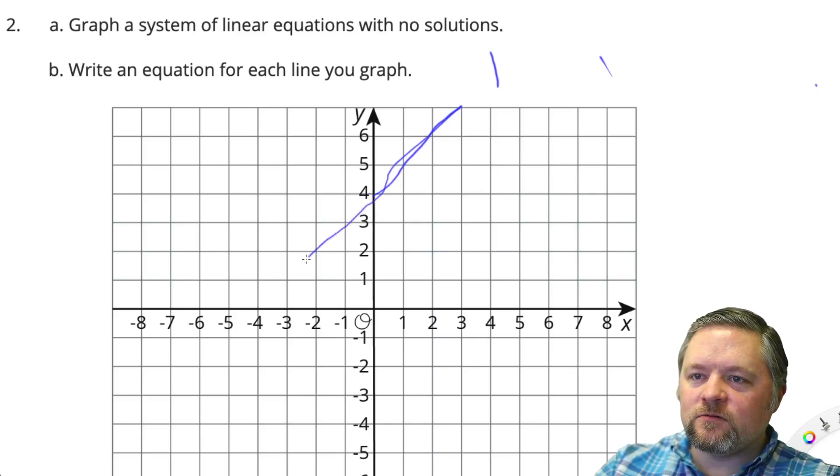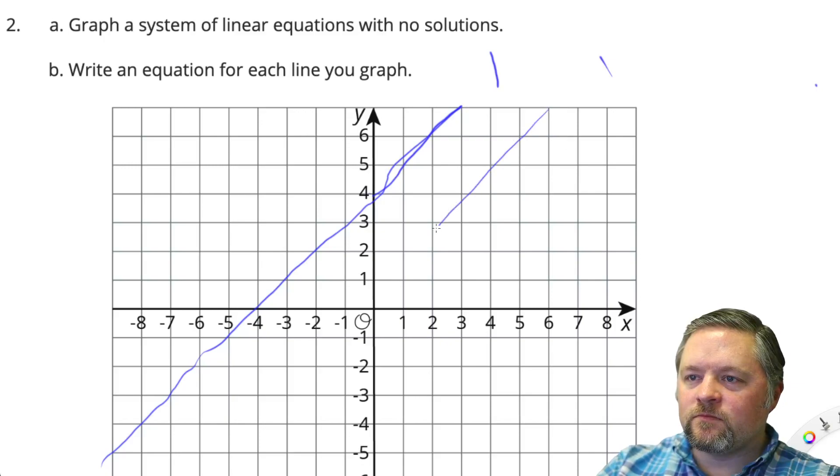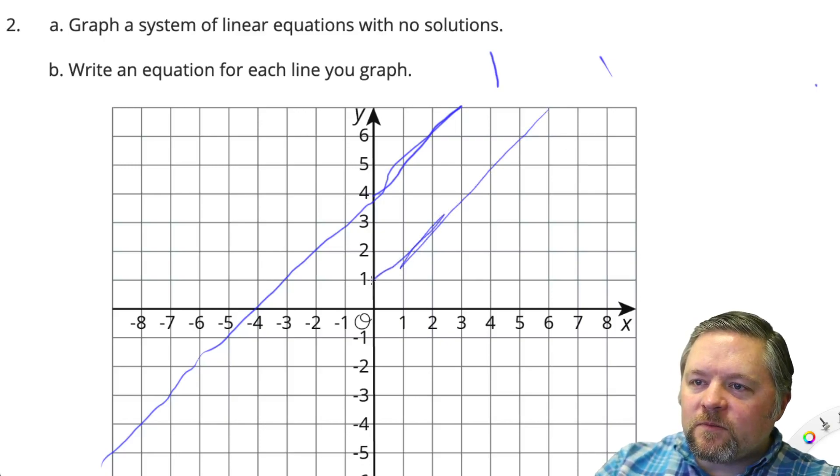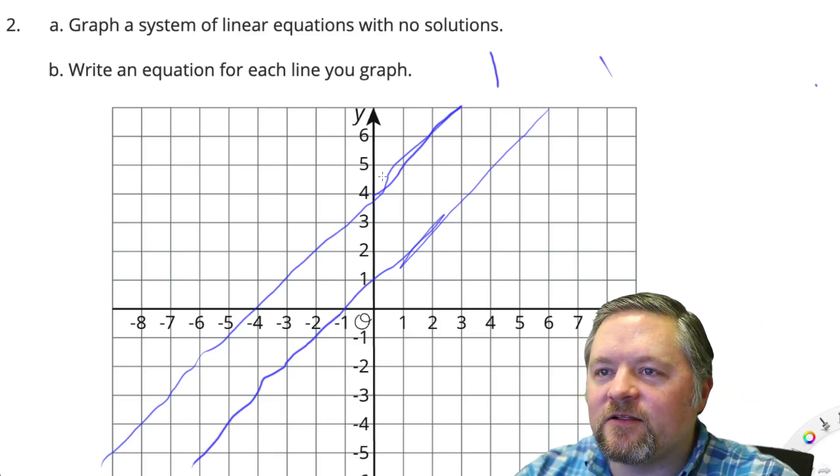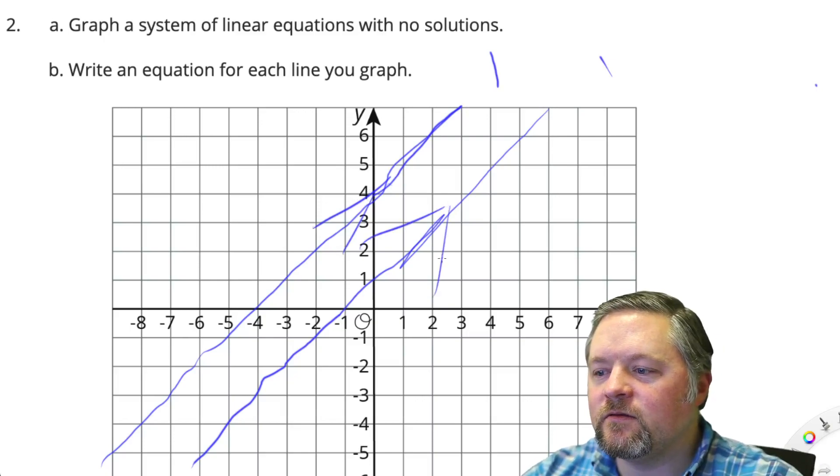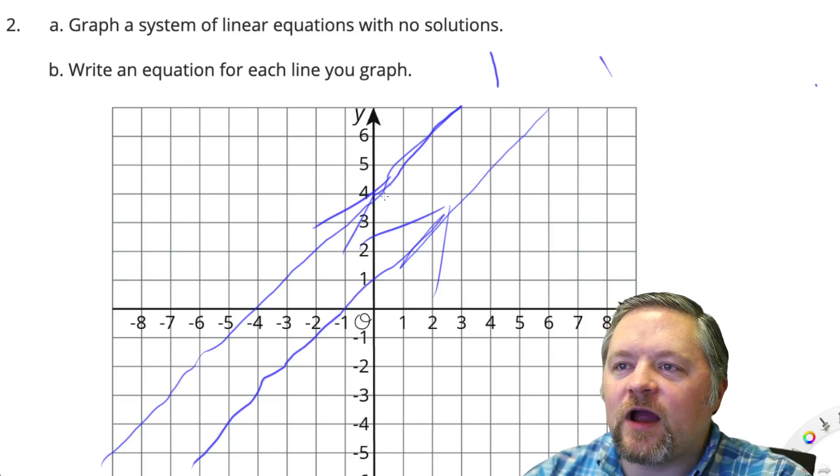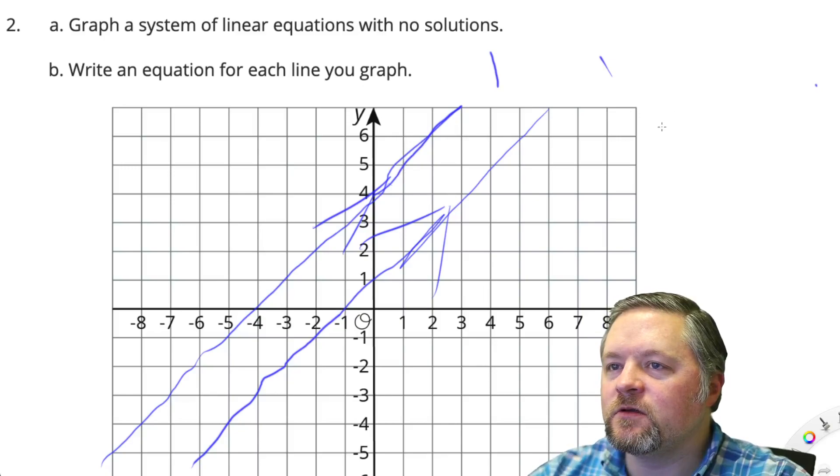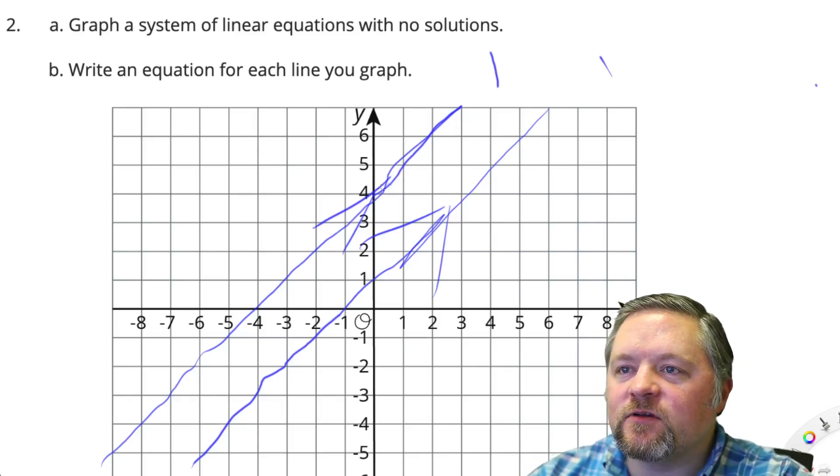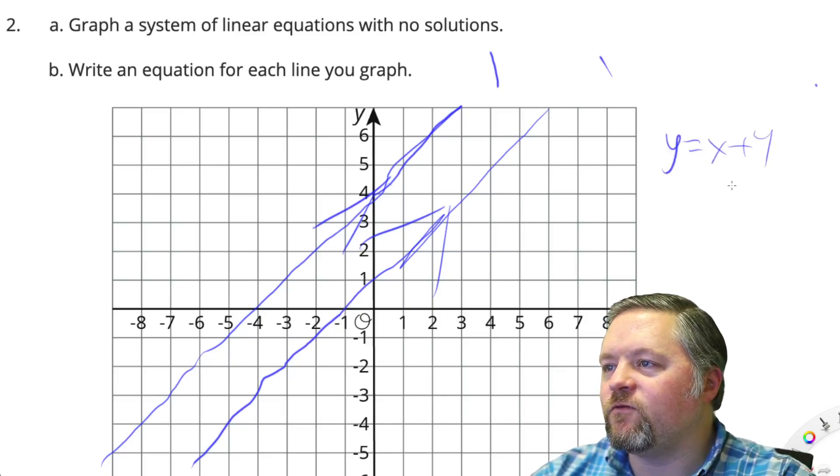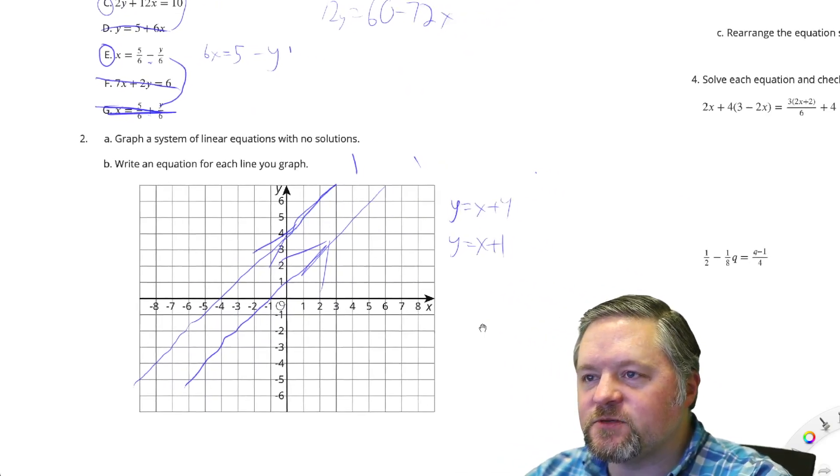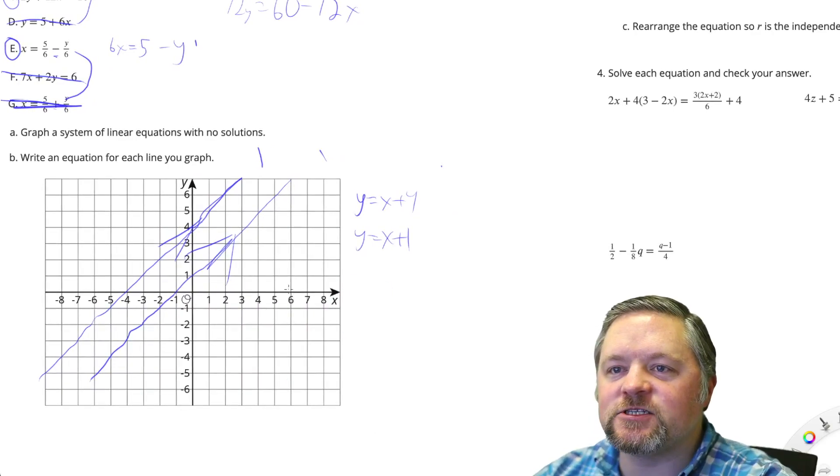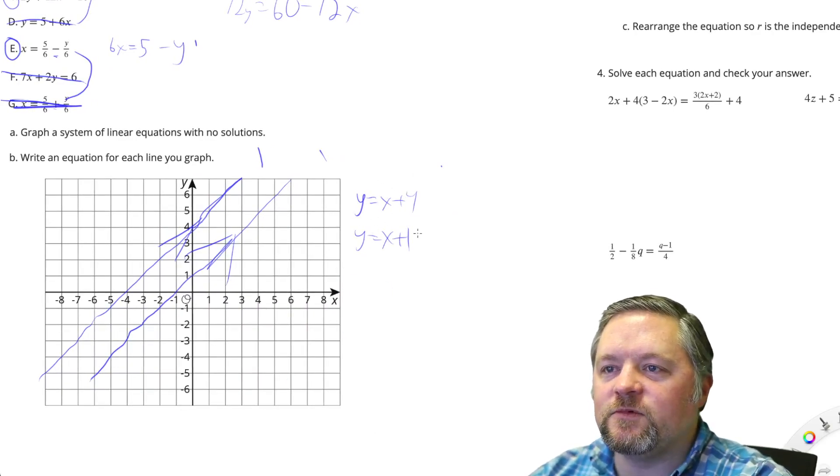One line. Do a better job. I really need better practice at drawing straight lines. There. They're parallel. Write an equation for each line you graph. I purposefully gave each of those a slope of 1, up 1 over 1. One has a y-intercept of 1, the other one has a y-intercept of 4. Y equals x plus 4. Y equals x plus 1. You don't need the same slope as me. You don't need the same intercepts as me. You just need two lines that are parallel, meaning same slope, different y-intercept.